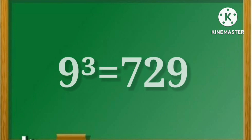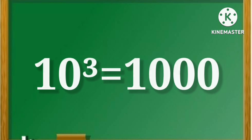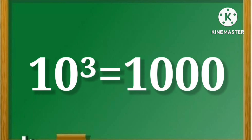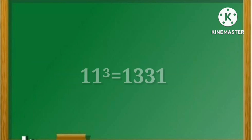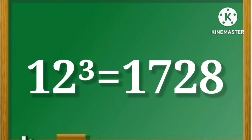9 cube is equal to 729. 10 cube is equal to 1000. 11 cube is equal to 1331. 12 cube is equal to 1728.